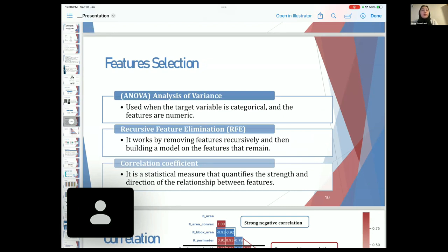ANOVA was used when the target variable is categorical, and the features are numeric. RFE, or recursive feature elimination, works by removing features recursively and then building a model on the features that remain.